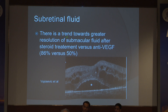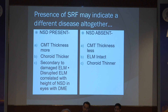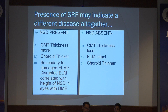In a published paper, there was a trend towards greater resolution of submacular fluid after steroid treatment versus anti-VEGF: 86% to 50%. The presence of SRF may indicate a different disease entity altogether. If neurosensory detachment is present, look at CMT thickness, choroidal thickness, and secondary changes to the damaged ELM. Disrupted ELM correlates with height of the NSD. Whereas in absent NSD, the CMT is less, ELM is intact, and the choroid is usually thinner.